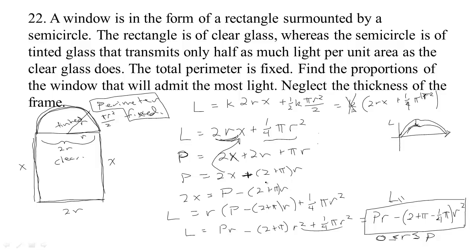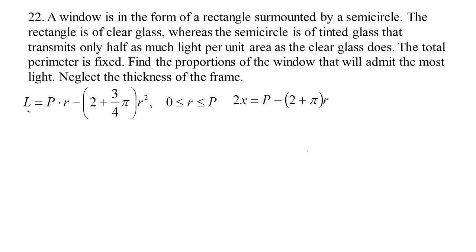I'll copy that on another slide. So, we have the light that's transmitted is equal to p times r minus 2 plus, I had a pi minus a quarter pi, so I just wrote that as 3 quarter pi r squared. We've got some bounds on r so that it's continuous closed function, continuous function on a closed bounded interval. And then we have this relationship between x and r. Once we've found r, I'm going to need that.